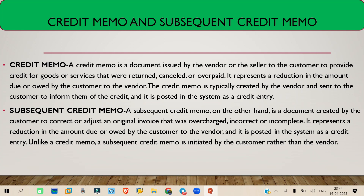Another scenario: the vendor sent an invoice for 100 quantity but you only received 80 quantity — 20 were damaged. Let's say you already paid for 100 quantities. In that case, the vendor will provide you a credit memo stating that 20 items are still owed and will be sent back to you at some point.